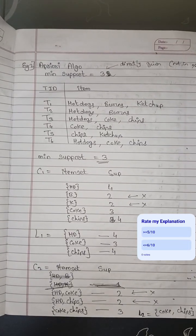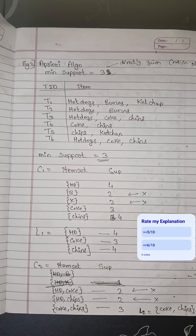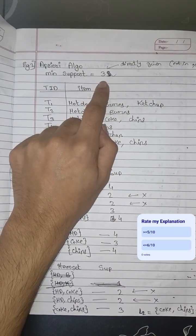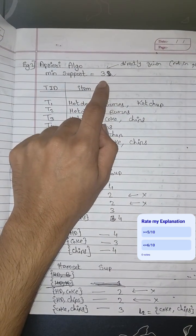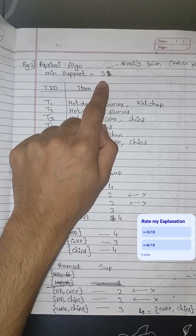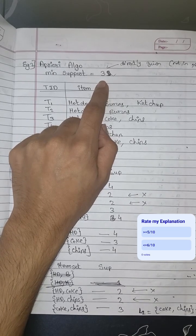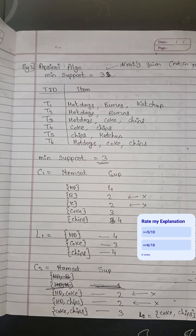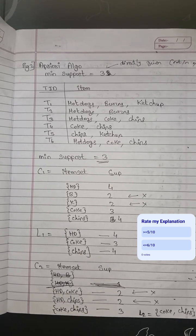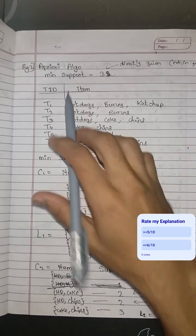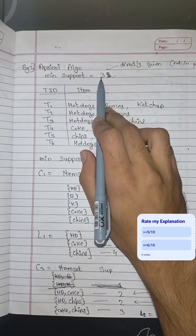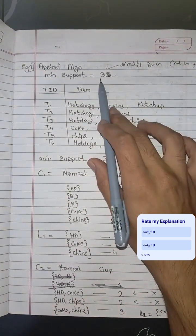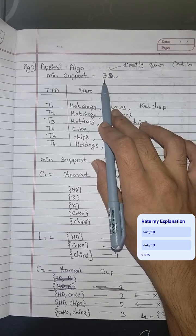Let us take one more example on Apriori algorithm. So the support is given as 3. In the previous question the support was 50%, then we multiplied with the number of columns that was 4, we got the support 2. But in this there is no percentage, so directly given, not in percent. We can understand by this the support is 3.